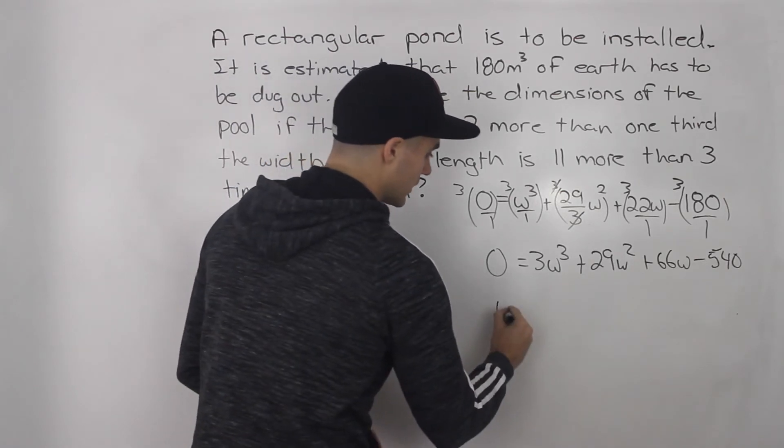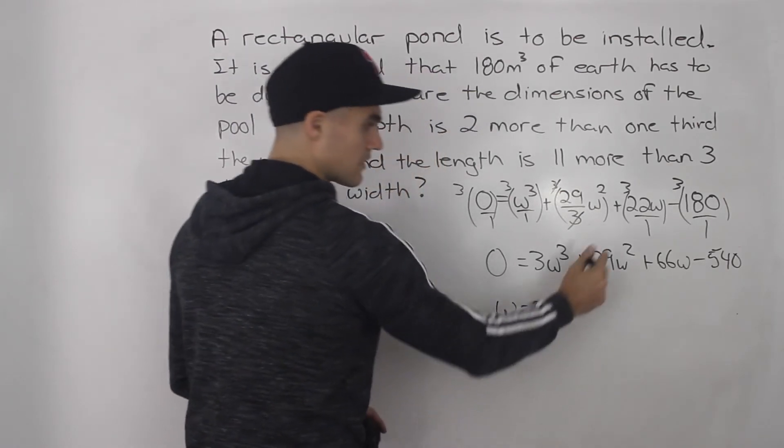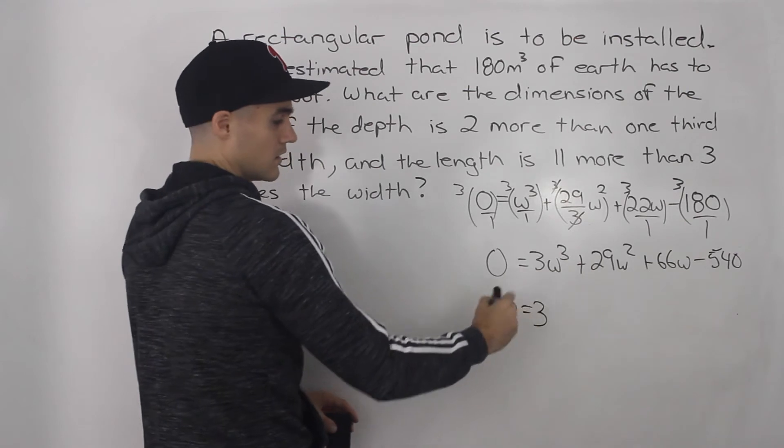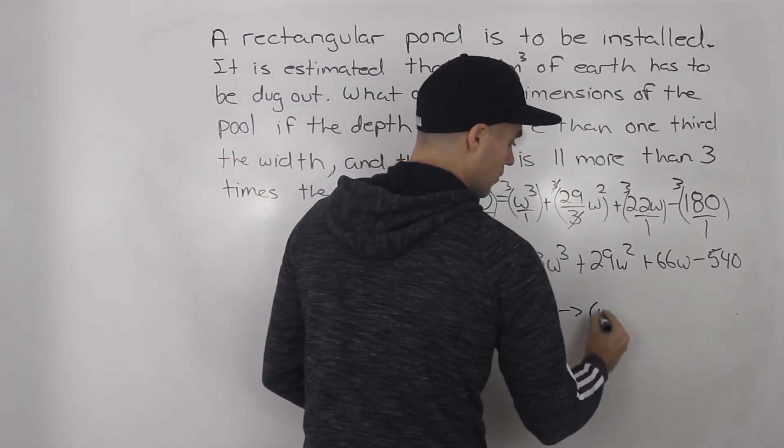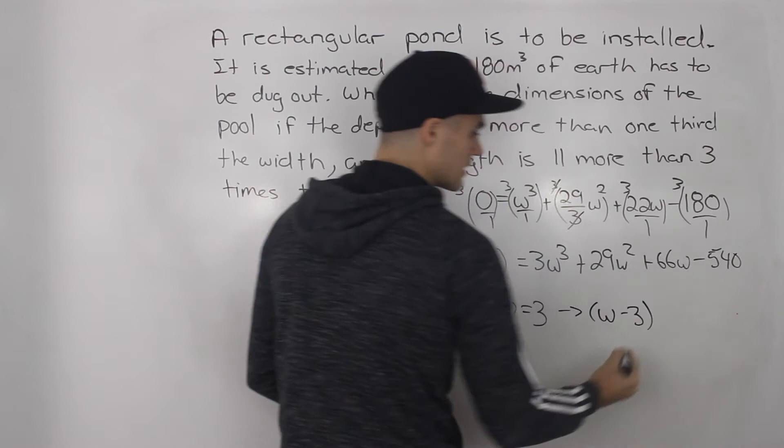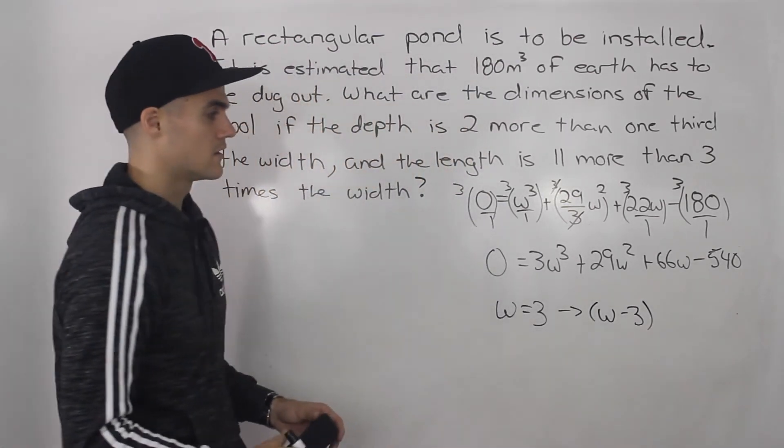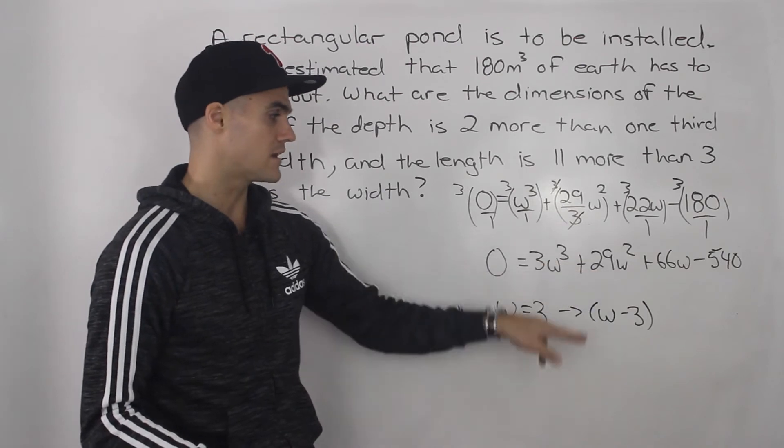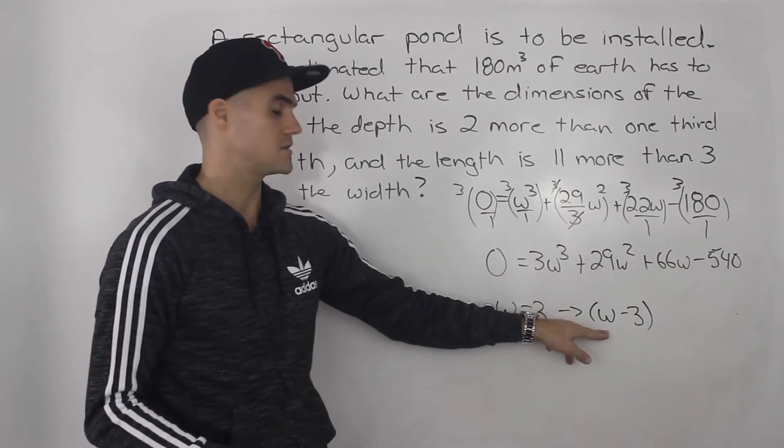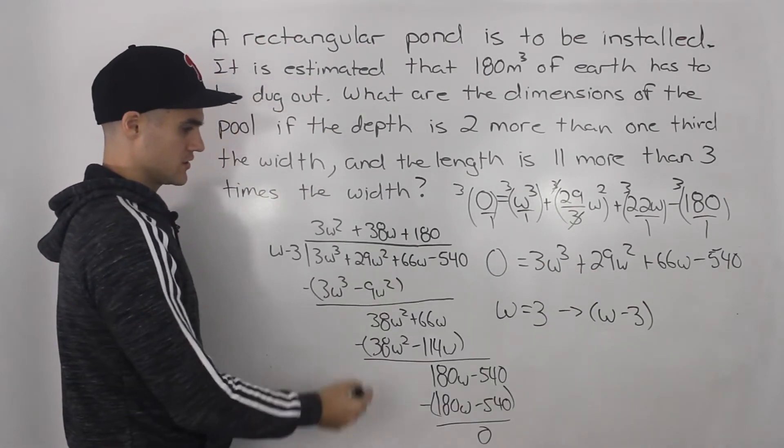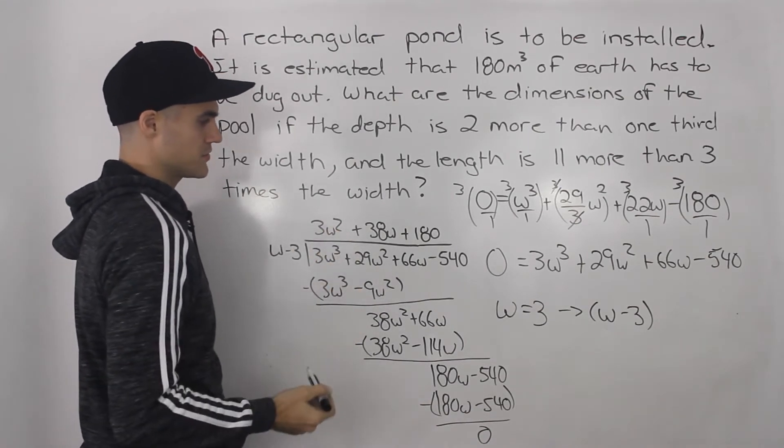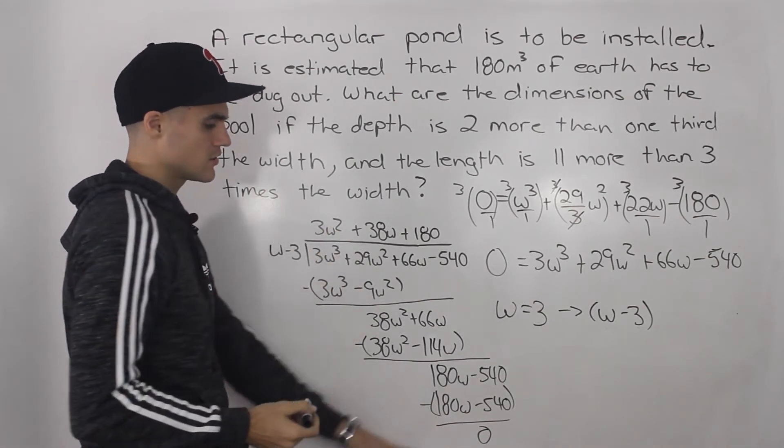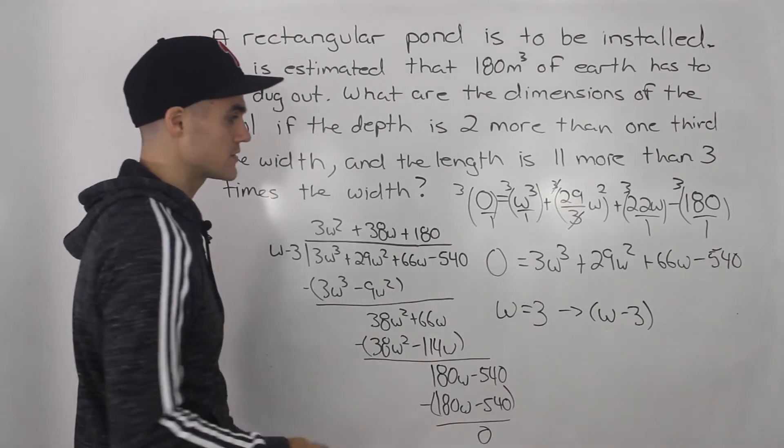And actually, if you plug in a w value of three, that would give you zero. So because w equals three works, then we know w minus three is a factor. So we can break down this cubic function here by dividing it by its factor w minus three. And when you do that long division on the side here, you end up getting this quotient three w squared plus 38 w plus 180 should get a remainder of zero as well.